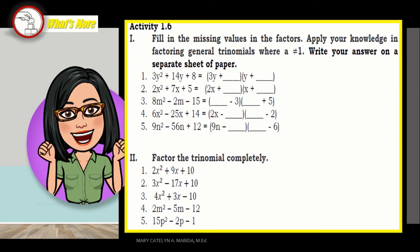Set 1: Fill in the missing values in the factors. Apply your knowledge in factoring general trinomials where a is not equal to 1. Write your answer on a separate sheet of paper. So number 1: 3y squared plus 14y plus 8 equals the quantity of 3y plus blank—you fill that up—times the quantity of y plus blank—you fill that up.